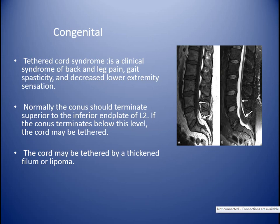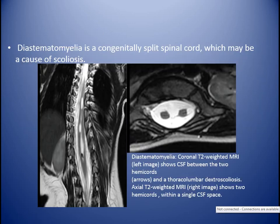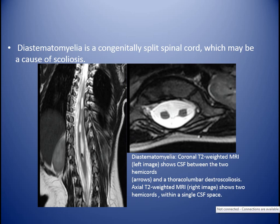Congenital lesions: tethered cord syndrome means the spinal cord is tethered or attached to the surrounding tissue. It presents as a clinical syndrome of back pain, leg pain, gait spasticity, and decreased lower extremity sensation. Normally the cord should terminate superior to the inferior end plate of L2; if it terminates below this level the cord may be tethered, also by a tight filum or lipoma. Diastematomyelia is a congenital split spinal cord which may be a cause of scoliosis. Coronal T2 MRI shows CSF cleft between the two hemicords, and axial T2 shows two hemicords — either within a single neural sac or each with a separate neural sac. A fibrous or bony spur divides the cord; the bony spur is seen on CT and fibrous spur is better seen on MRI.